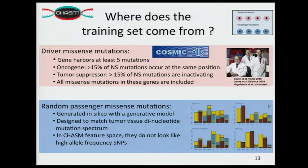You might wonder how we've trained this classifier. This paper was published a few years ago in Cancer Research. Briefly, we identified driver missense mutations with the aid of Bert Vogelstein, Ken Kinzler, and Victor Velculescu, who looked through the COSMIC database and curated missense mutations they believe are drivers, in both tumor suppressors and oncogenes. For our negative class, since we don't really know what passengers look like, we do an in-silico simulation, carefully matching the dinucleotide spectrum of a particular tumor type when generating random passengers. Importantly, our random passengers do not look like SNPs.